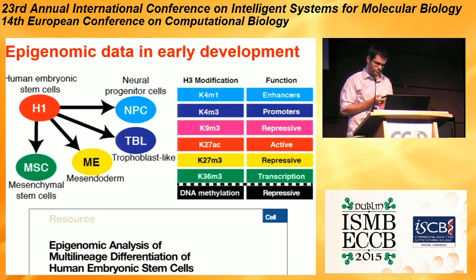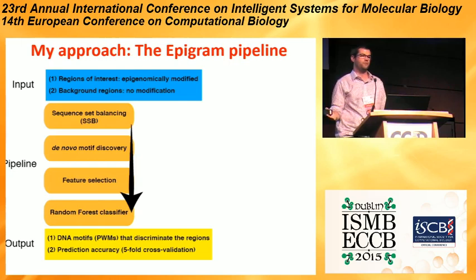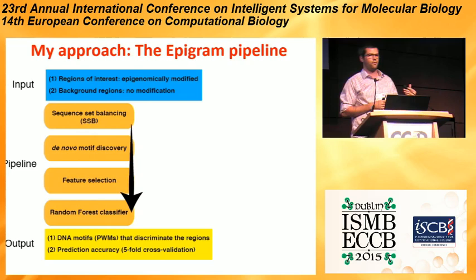This is the analysis scheme I used — a pipeline called Epigram, which I developed. At the core of it, you start with two sets of regions: regions which you think have a modification (peaks you've called), and a background set of regions which don't have your modification. I make sure the background is mappable, so I know it's not just a lack of mappability giving rise to a lack of signal.